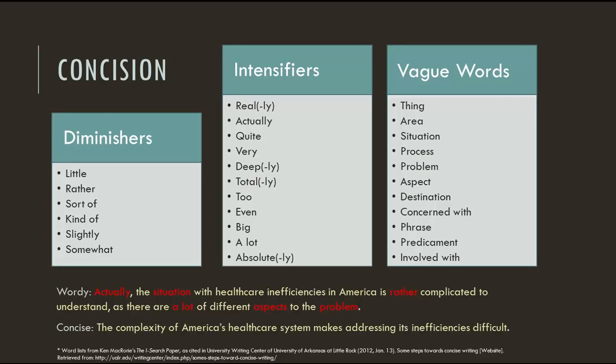Check out this wordy sentence: "Actually, the situation with healthcare inefficiencies in America is rather complicated to understand, as there are a lot of different aspects to the problem." A much better alternative is possible if we cut the diminishers, intensifiers, and vague words, and clarify a few concepts: "The complexity of America's healthcare system makes addressing its inefficiencies difficult." It's not only more concise, but also much clearer.